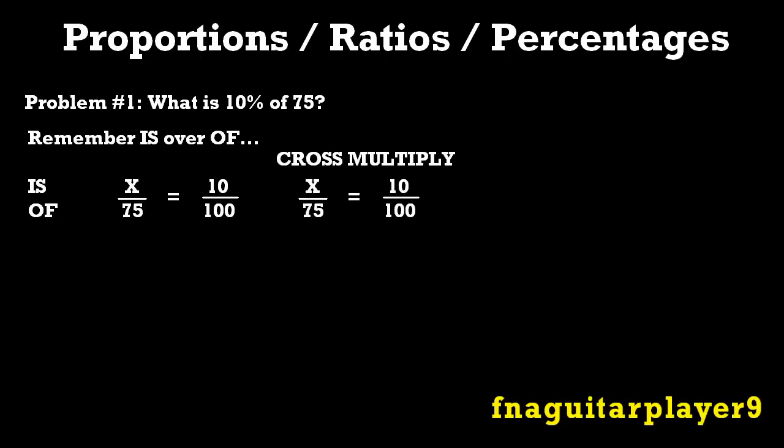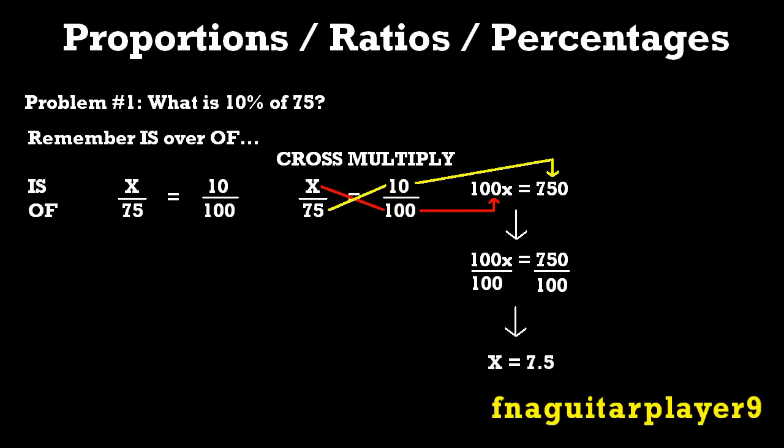Then the next thing you do is you cross multiply. You do 100 times x, or x times 100 and it comes out to 100x. Then you get equals 75 times 10, which comes out to 750. Then the next step, you need to get x by itself. So you divide both sides by 100. Because anytime you do something on one side of the equal sign, you have to do the same thing on the other side. Then you get your answer, x equals 7.5. So 7.5 is 10% of 75.